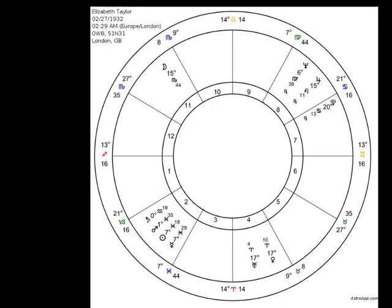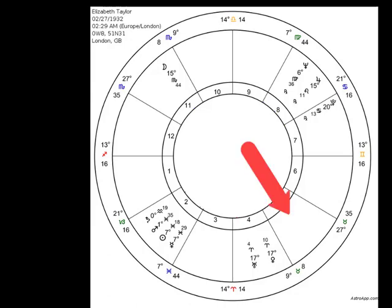Here is the chart of Elizabeth Taylor. She had four children — which would be the fifth house — but there's nothing in there. She was married eight times, with much romance and love affairs — that's the fifth house — and she was in entertainment and show business practically all of her life, also the fifth house. Nothing in there in the regular chart.